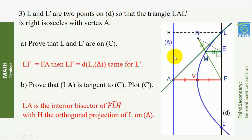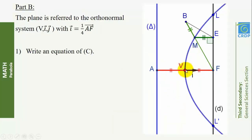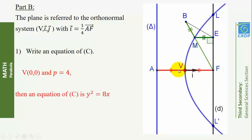Part B. The plane is referred to the orthonormal system (V, I, J) with I = ¼ vector AF. Write an equation of C. V(0, 0) and P = 4. Since C opens right, the coefficient of x is positive. Hence an equation of C is Y² = 8X.